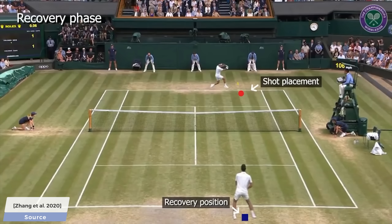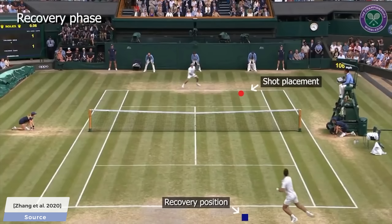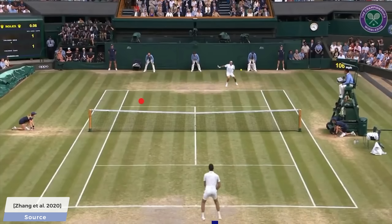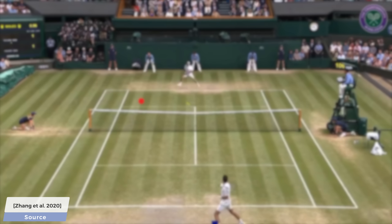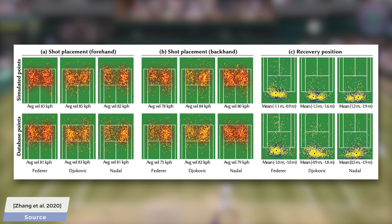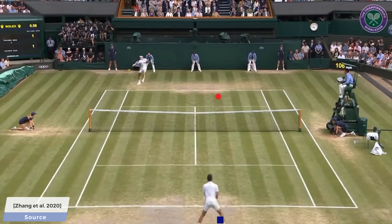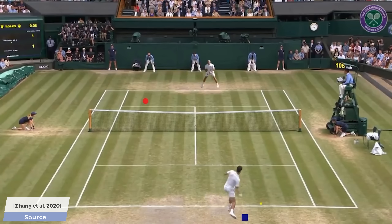These virtual characters don't just look like their real counterparts — they also play like them. The authors analyzed the playstyle of these athletes and built a heat map that contains information about their usual shot placements for the forehand and backhand shots separately, the average velocities of these shots, and even their favored recovery positions. If you look at the paper, you'll see they not only include this statistical knowledge but also went the extra mile and included common tennis strategies as well.